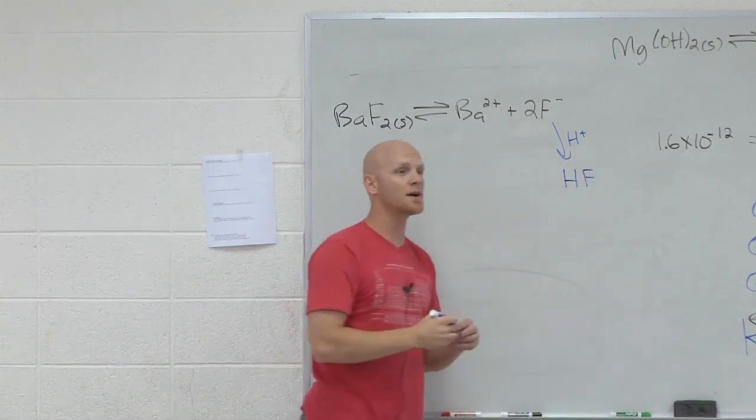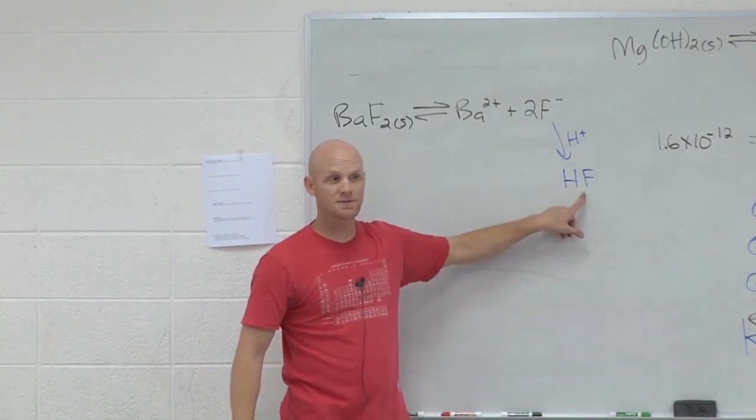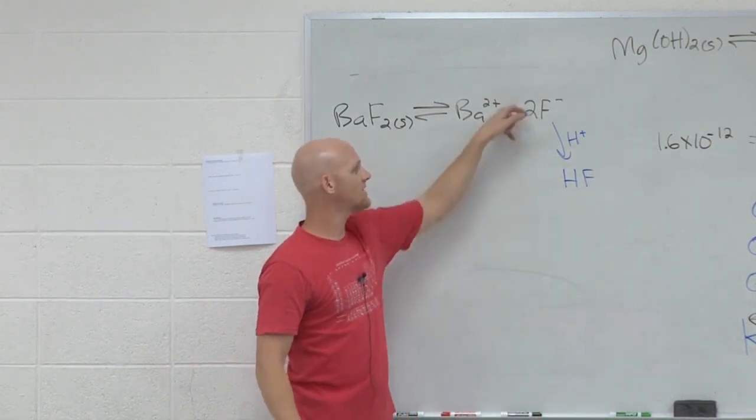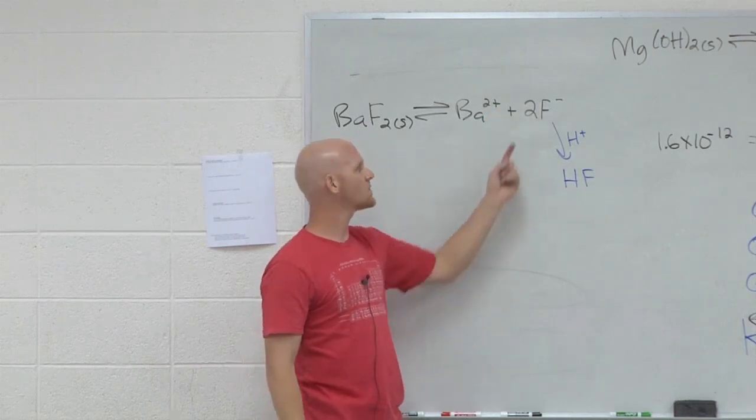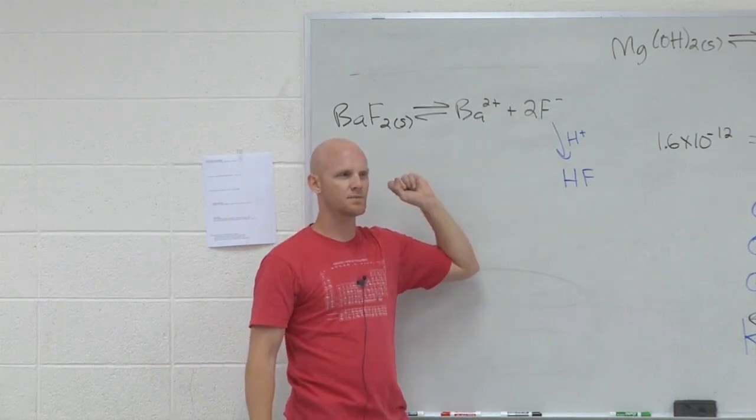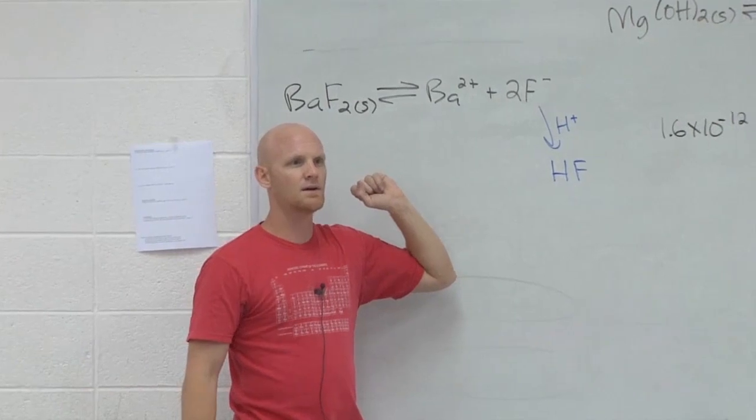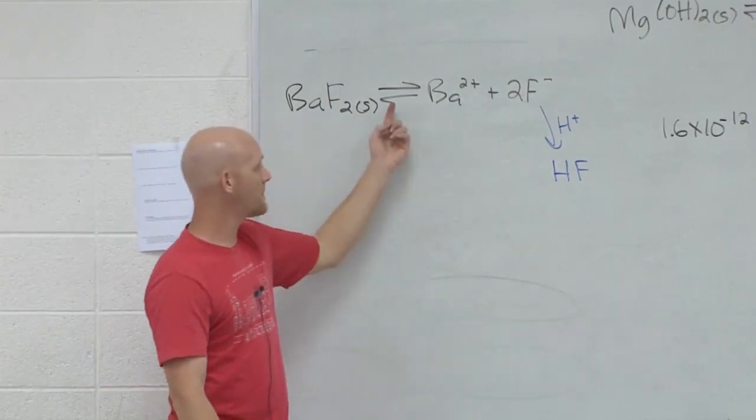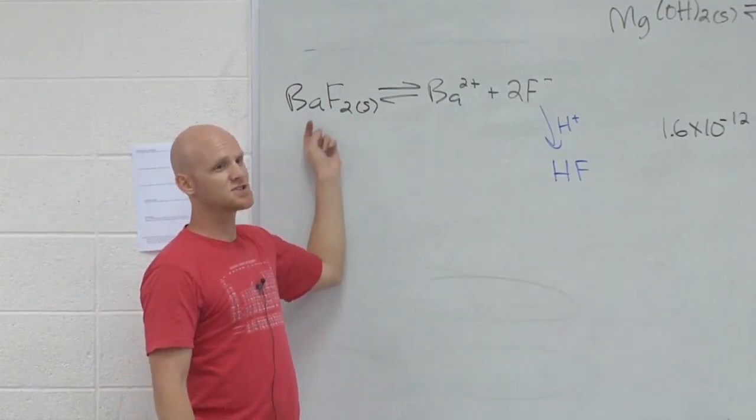So I didn't turn it into a frog, but I did turn it into something besides F minus. And so because I added acid, what happens to the overall concentration of F minus in the solution? It goes down. And so what happens to this equilibrium? Shifts to the right.